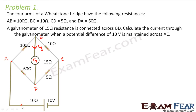First let us look at the current distribution. Let us suppose some current I comes out of the battery. I1 flows on to one side and I2 comes on the other side. I1 reaches the junction where IG flows through the galvanometer, so I1 minus IG will flow across BC. I2 comes to the other junction, so I2 plus IG will flow across that side. They both join together to again form I, that is I1 plus I2, which comes back to the battery.